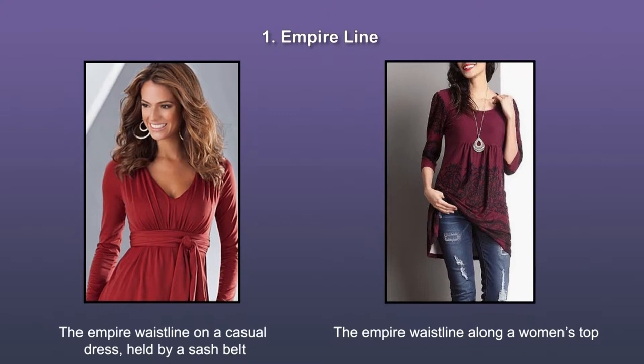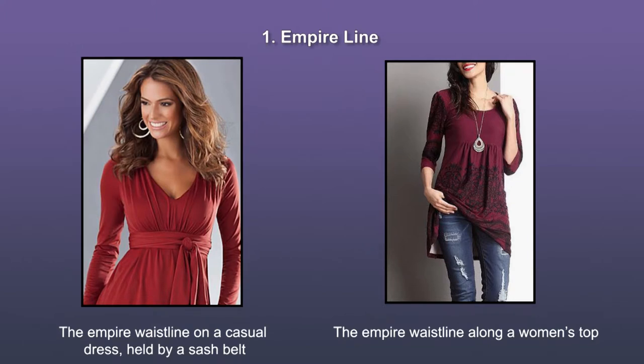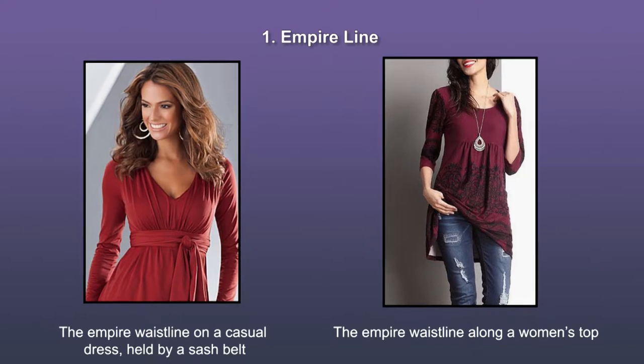The front has been cinched by gathering the fabric and securing with a band to form the empire waistline. We can see more examples of the empire waistline in the following images. The red dress has an empire waistline held by a sash belt. On the right is a woman's top, with the fabric gathered at the lower part of the empire line, which is usually the purpose of an empire cut waistline.